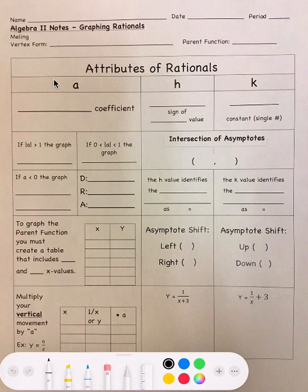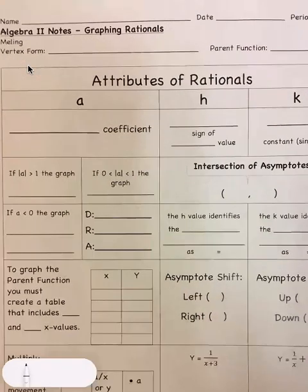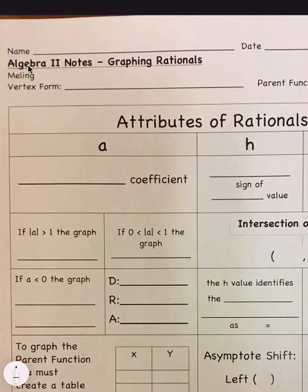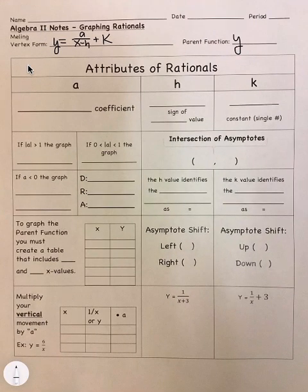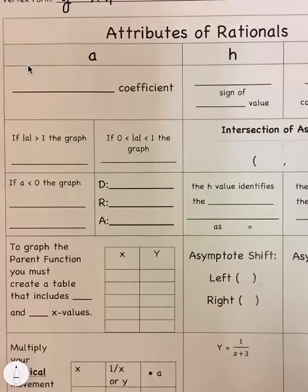Okay, so we're graphing rationals here today. The vertex form of this is y equals a over x minus h plus k. So it's back to kind of what we did first semester. And the parent function is y equals 1 over x. That's our general form equation. It's fractions that we've been dealing with. So let's go through what each thing means.